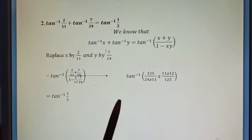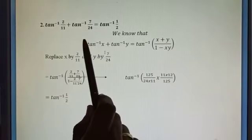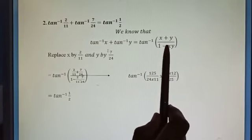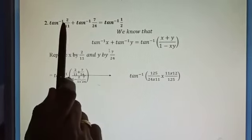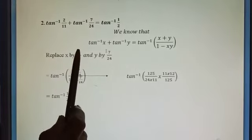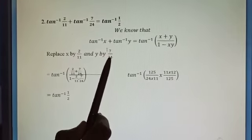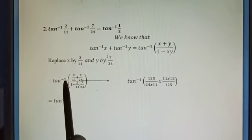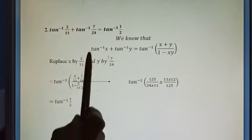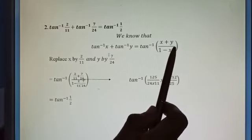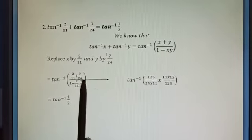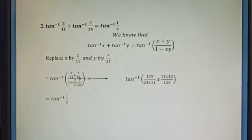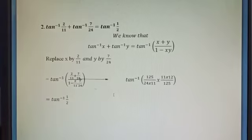We know the formula: tan⁻¹(x) + tan⁻¹(y) = tan⁻¹((x + y) / (1 - xy)). Here we replace x with 2/11 and y with 7/24. So we rewrite the left-hand side as tan⁻¹ of (2/11 + 7/24) divided by (1 - (2/11)·(7/24)).